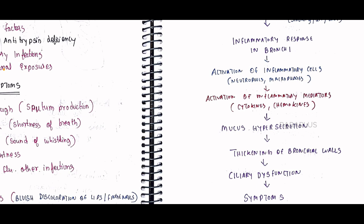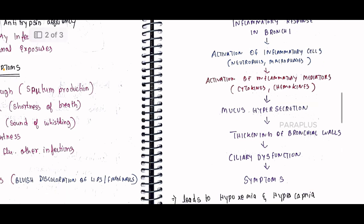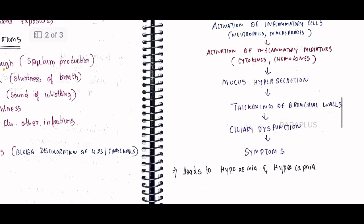Activation of inflammatory mediators such as cytokines and chemokines follows. Mucus production is increased — hypersecretion. This causes thickening of the bronchial walls, which become thick and blocked. There is also ciliary dysfunction.